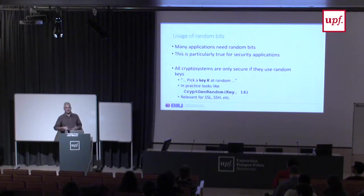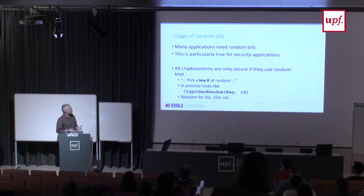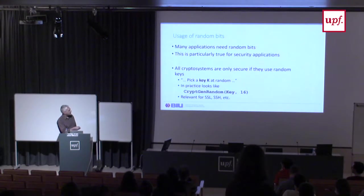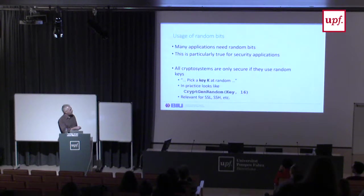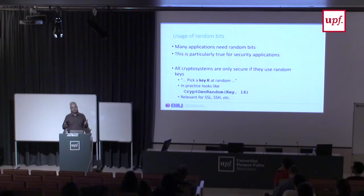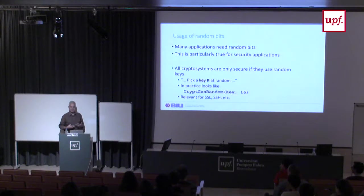In cryptography, every cryptographic construction usually says something like: pick a key at random. Security depends on using random numbers, and the question is how we pick them. A computer cannot flip coins, so we need a random number generator. For instance, in Windows they call this function CryptGenRandom, which provides 16 bytes of random bits and inputs it to a key variable. This is relevant for any cryptographic construction that we might use.